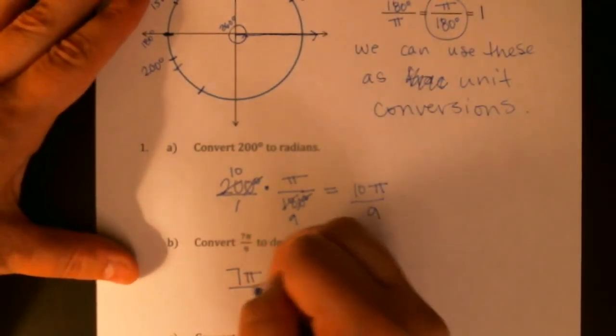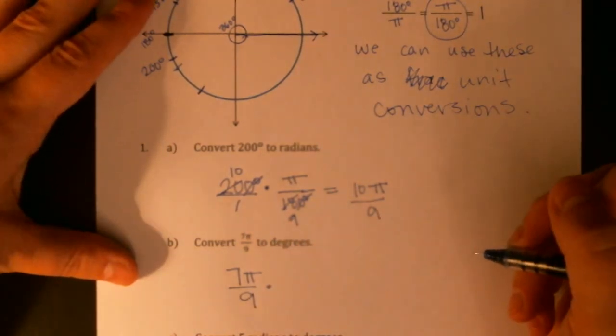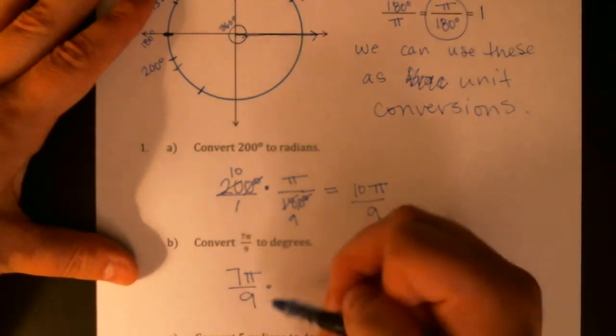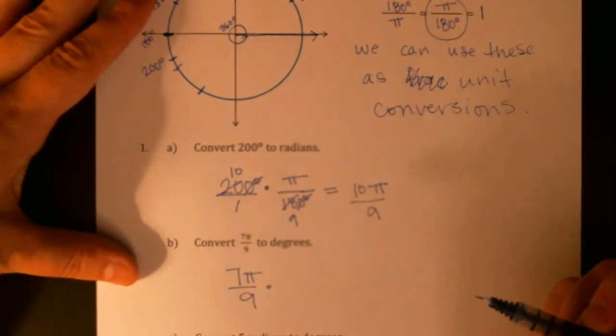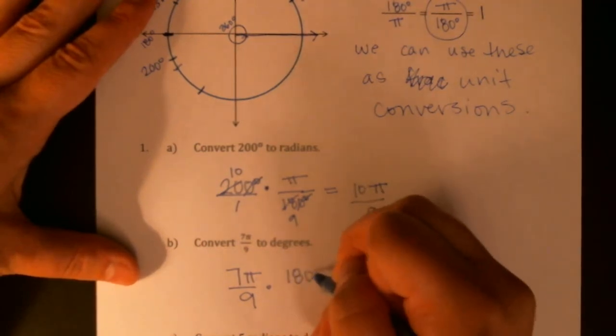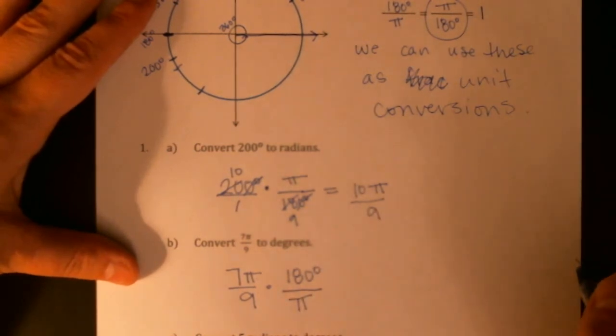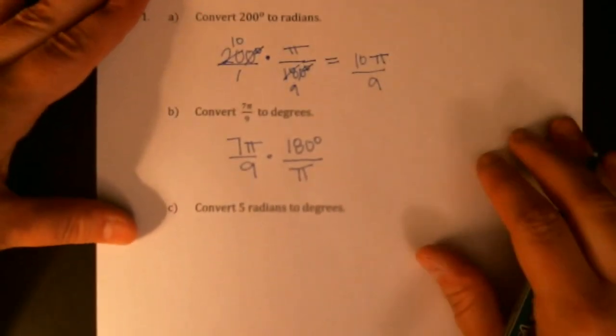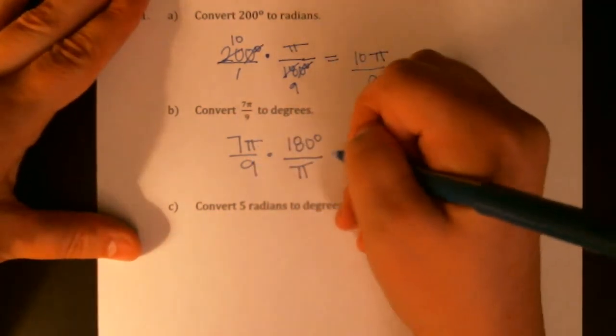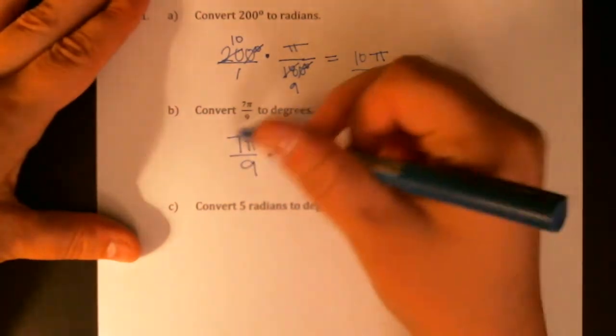Let's go the other direction. We can convert from radians to degrees as well. If we're starting with 7π over 9 radians and we want to convert to degrees, this time we're not canceling units because radians are unitless. There are no radians here. We are trying to introduce degrees into this, so we want those to end up on the top. Let's use this fraction: 180 degrees divided by π is equal to 1.